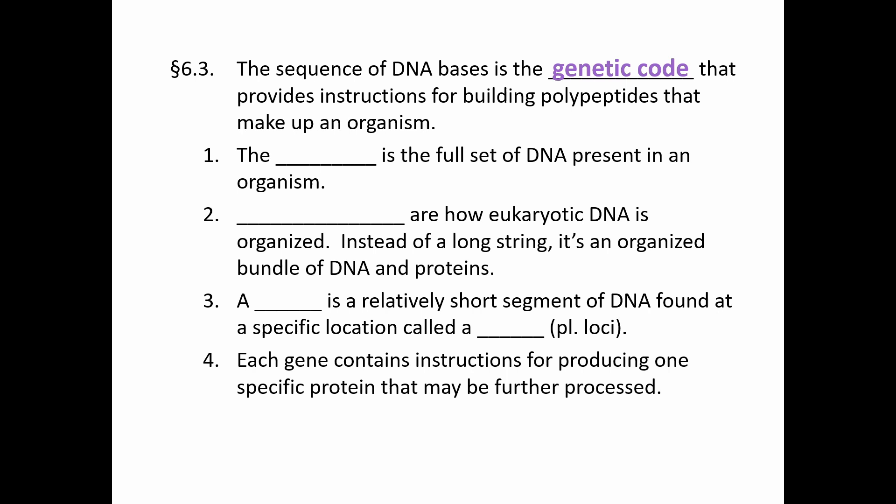The sequence of DNA bases is the genetic code that gives us all the instructions to build the different polypeptides and proteins that make up our cells and our whole bodies. It's the entire set of DNA that we call the genome. We organize this genome in the form of chromosomes, mainly when looking at eukaryotic DNA — in animal, plant, fungus, and protist cells. We have certain sections of DNA that code for genes, and we can find these genes in very specific regions. We call that location or region the locus.